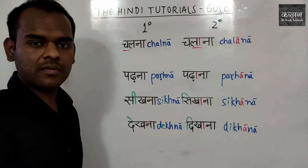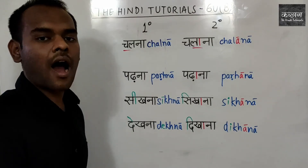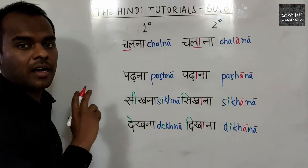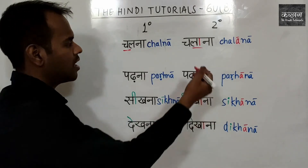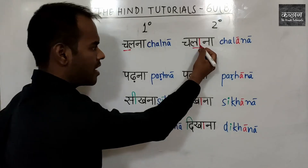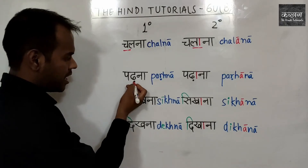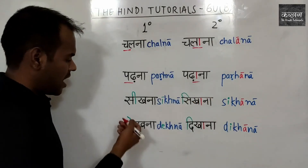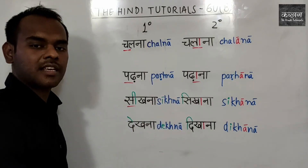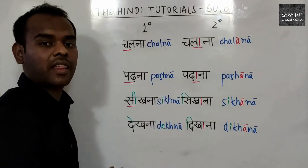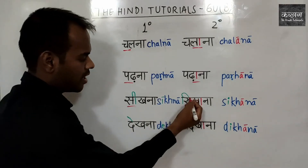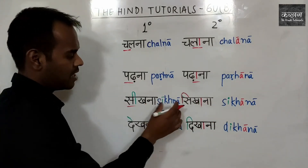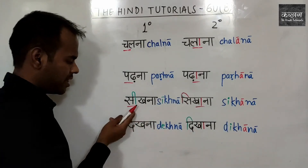Para hacer este cambio, agregamos una vocal larga 'a' a la siguiente consonante. El estrés está en chalna; para moverlo, agregamos 'a' a la siguiente consonante y se cambia a chalana. De la misma manera, parna se cambia a parhana — hemos agregado una vocal larga a la siguiente consonante. En sikhna, el estrés está en la primera consonante. Para moverlo, reemplazamos la vocal larga de la primera letra con una vocal corta y luego agregamos una vocal larga a la siguiente consonante: sikhna → sikhana — aprender, enseñar.